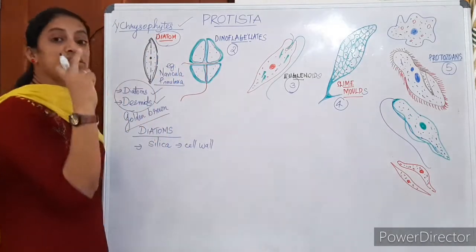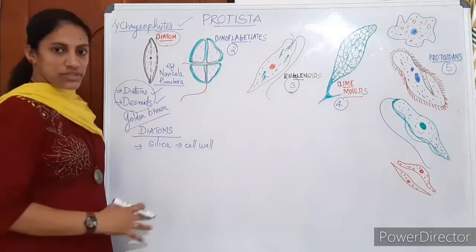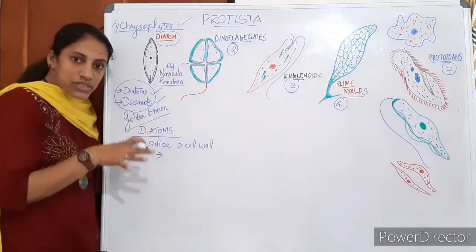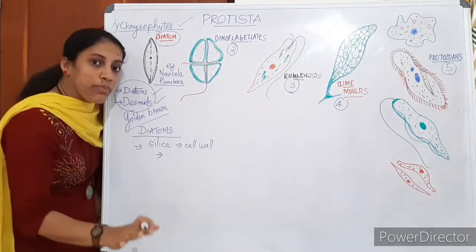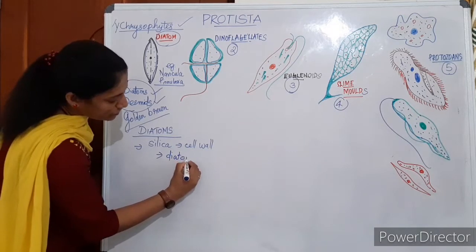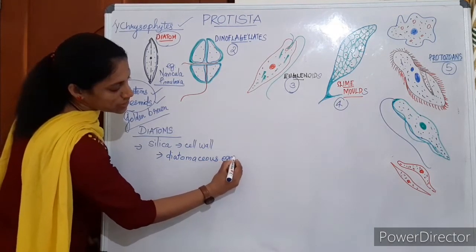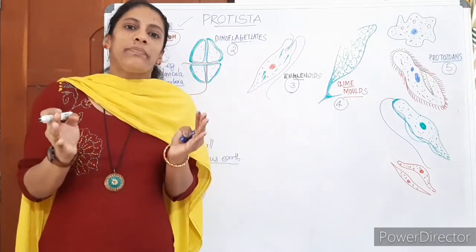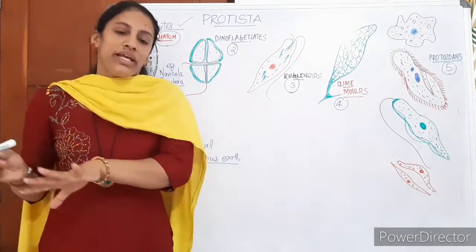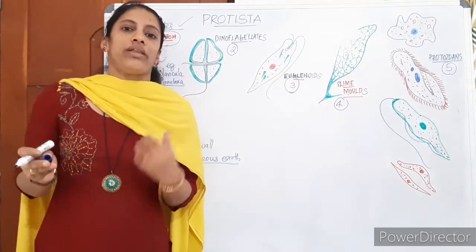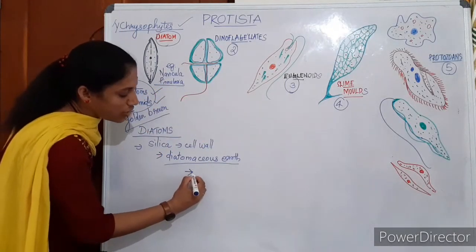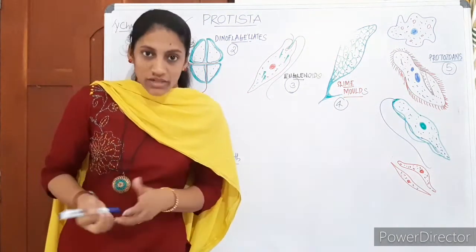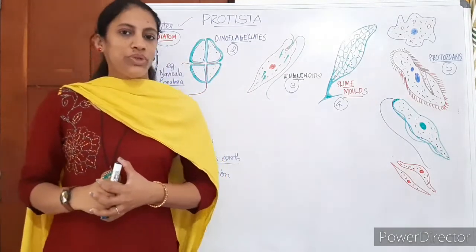The siliceous cell wall remains as two overlapping halves — that is why the name 'diatoms.' When diatoms die after their lifespan and get deposited at the bottom of the ocean, they form a silica-rich soil known as diatomaceous earth. This gritty soil rich in silica has great use in industries — it is used in filtration of oils, syrups, etc.